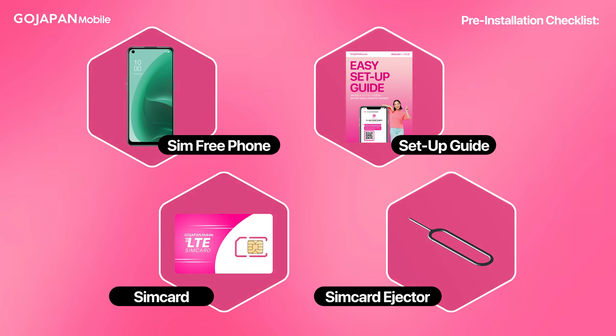To properly set up your APN, you must have the following: an open-line SIM-free mobile phone, GoJapan SIM card, GoJapan guidebook for tutorials, and a SIM card ejector.